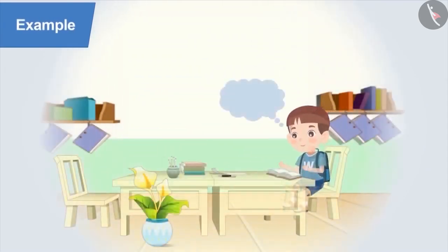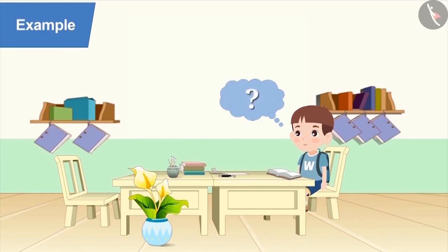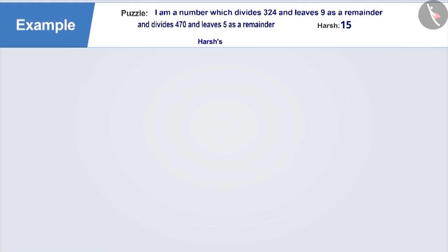Next example. Harsh loves to solve puzzles. One day, he found a puzzle in a book. The puzzle was: I am a number which divides 324 and leaves 9 as a remainder and divides 470 and leaves 5 as a remainder. He got 15 as the solution. Can you tell whether he is correct or wrong?